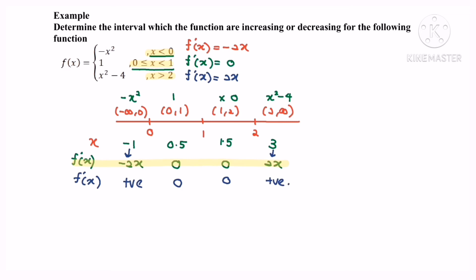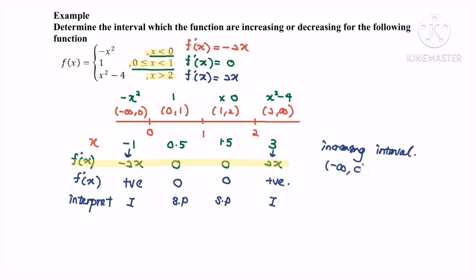Finally, interpret the situation. We have an increasing interval, then stationary or critical points, then another increasing interval. As a conclusion, the increasing intervals are negative infinity to 0 (0 not included) and 2 to infinity (2 not included). So here we are — thanks for watching.